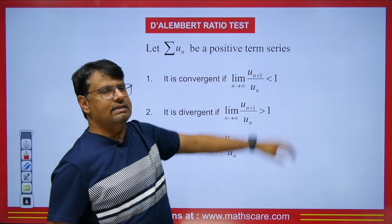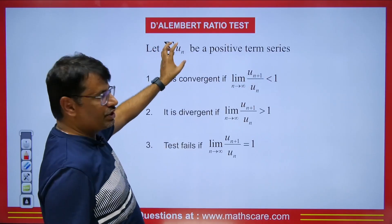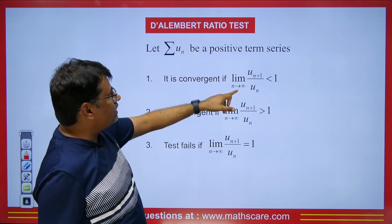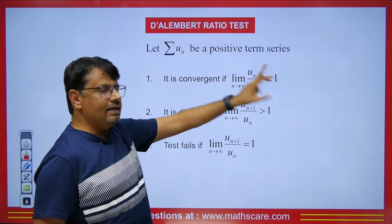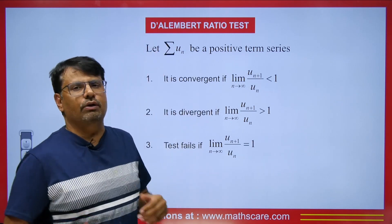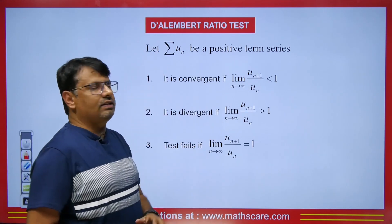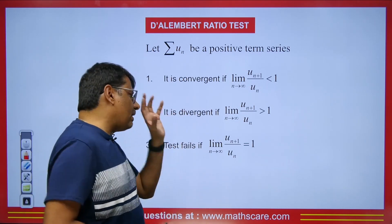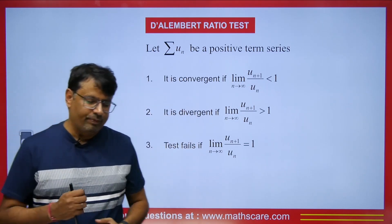If there is any positive term series given, as in summation u_n, if the limit as n approaches infinity of u_{n+1} upon u_n is determined to be less than 1, then this series is convergent. If its value is greater than 1, then in that case it is divergent. But if the value is equal to 1, then the test will be considered as failed.